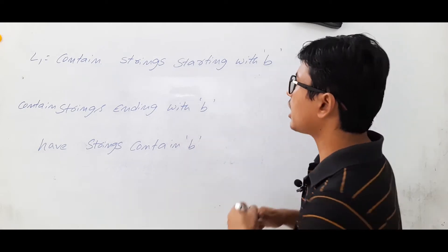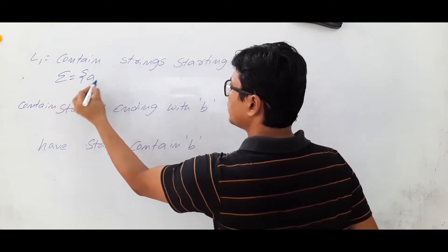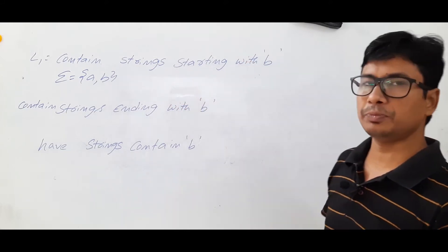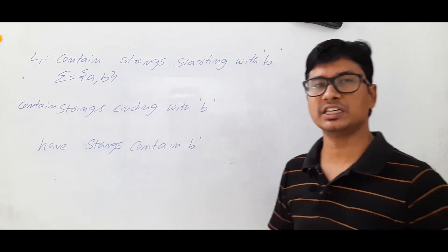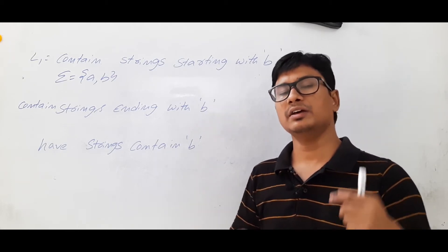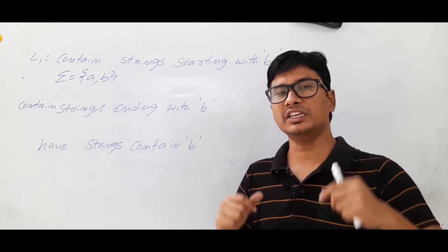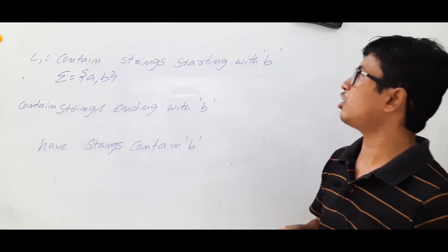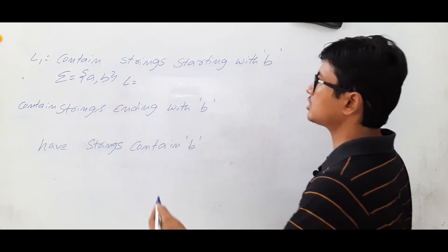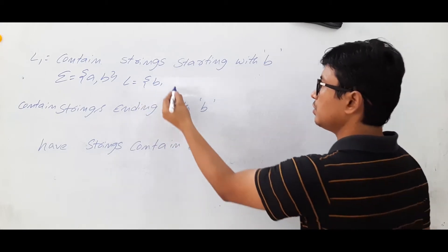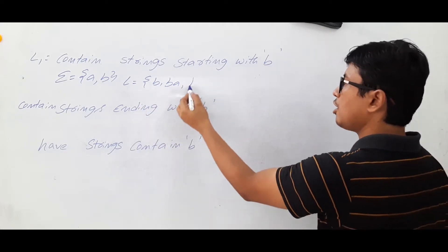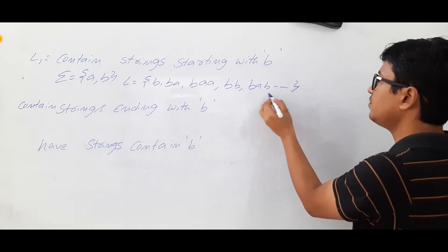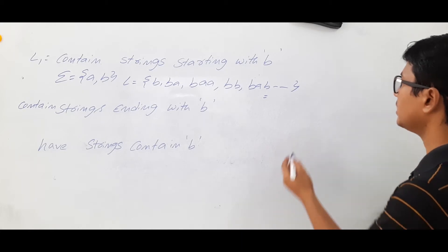Our alphabet is {A, B}. L1 is the language containing strings starting with B. For this kind of question we have constructed DFA and NFA, but they are a little tricky. For a language, you can easily write a regular expression. Strings starting with B: the smallest string is B, then BA, BB, BAB, and so on — it is an infinite language, but we can still write a regular expression for it.